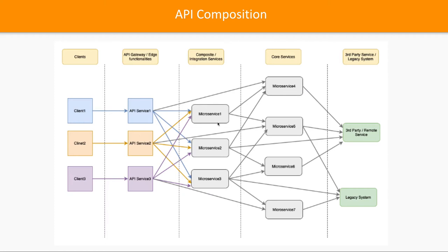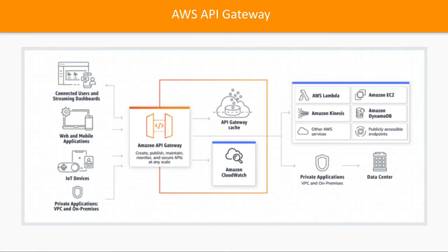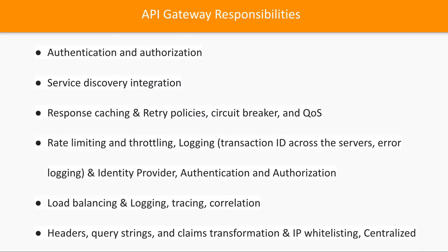Looking at a single flow: one client calls one API service through the API Gateway, which then talks to a microservice. That microservice itself may talk to multiple other microservices when data depends on third-party or remote services. So we can apply API composition at this level. These are the different implementations and responsibilities that the API Gateway pattern needs to deliver.